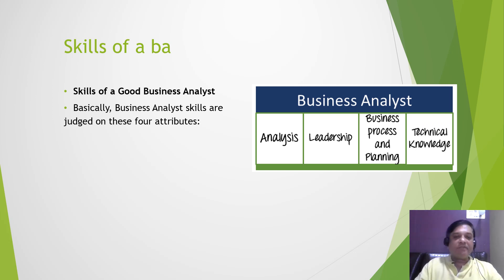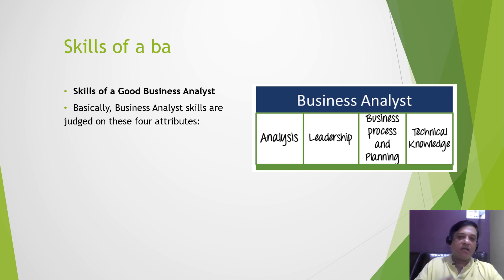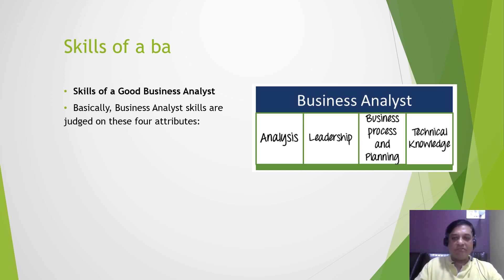The skills of a good business analyst are judged on four analysis attributes: analysis, leadership, business process and planning, and technical knowledge. Analytical skills separate out a good business analyst. A good part of the BA role includes business analysis data, workflow, user or stakeholder inputs, and documents. Leadership skills involve directing team members, forecasting budgets, and helping team members with problems.